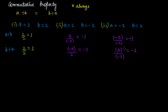Now you might say that since in all three examples a divided by b equals b divided by a, that satisfies the commutative property — so division follows the commutative property. But wait, that is not the case.